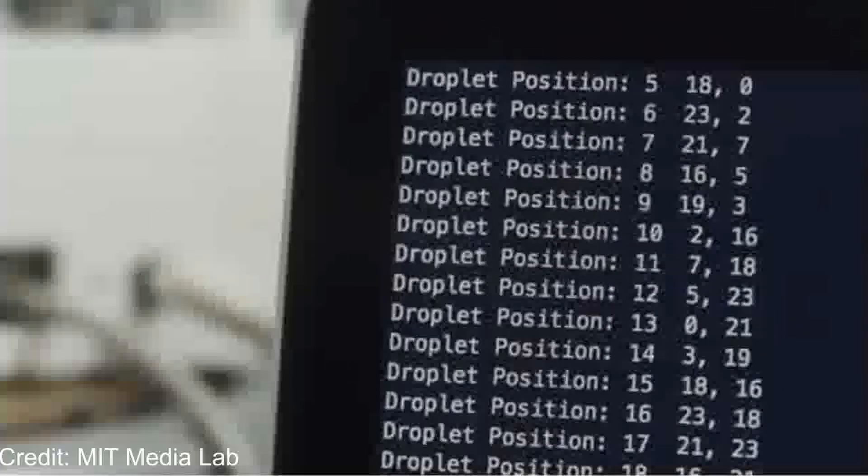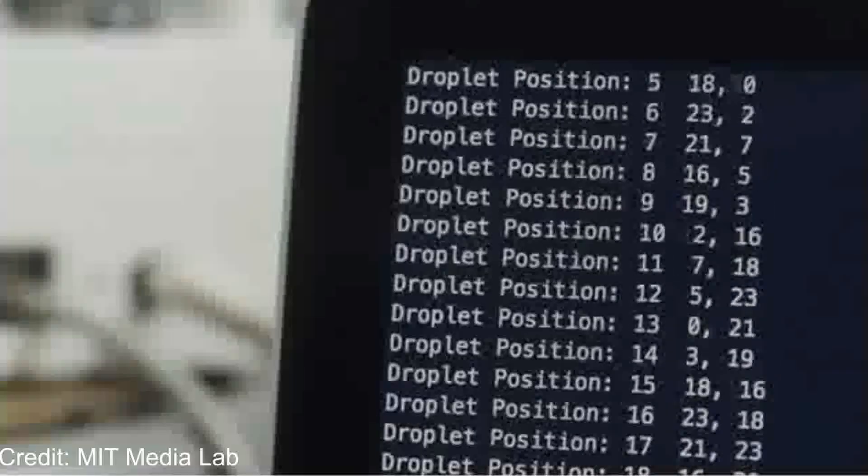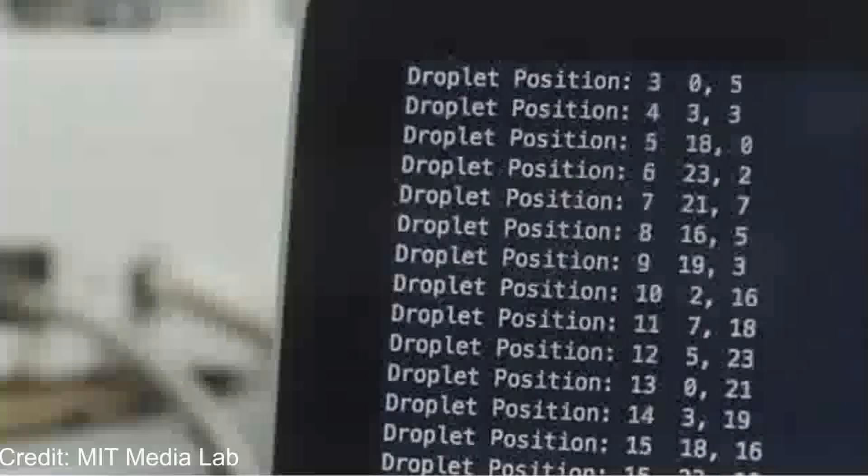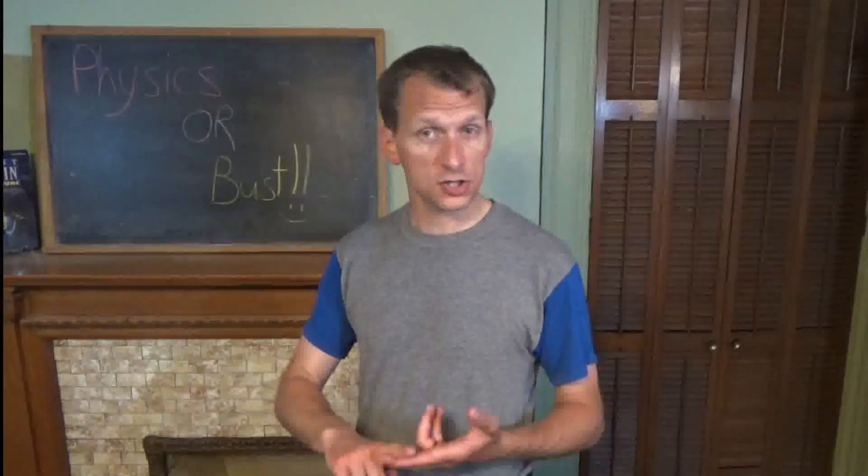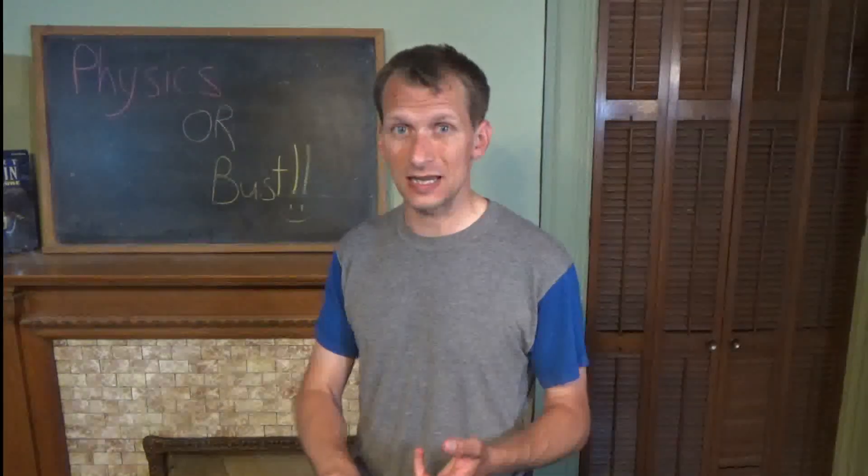Each droplet's position is tracked, and coil activation is planned out like a chess game. It calculated several moves ahead in order to prevent unwanted collisions, ensure precision, and maintain speed. This is what makes it programmable, not just in name, but in how it's literally controlled by lines of code.